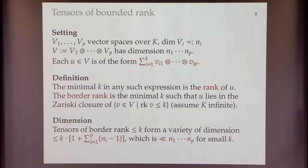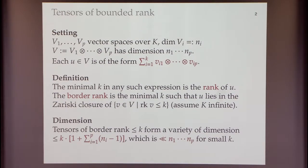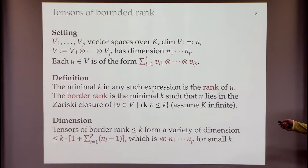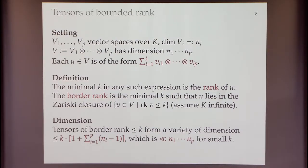By definition of a tensor product, every tensor is a sum of pure tensors — tensors of the form Vi1 tensor Vi2 up to ViP — for some number K. That expression is not minimal and not unique, which is to a large extent why we are here today. The minimal K in any such expression is called the rank of that tensor U.